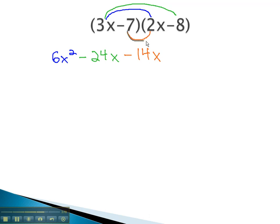Finally, L says to multiply the last term of each factor. Negative 7 times negative 8 is a positive 56. Again, in this problem, you see we have some like terms that can be combined. Combining those like terms will give us 6x squared minus 38x plus 56, and we have our product.